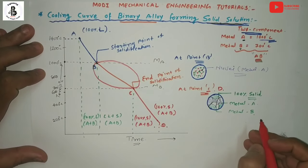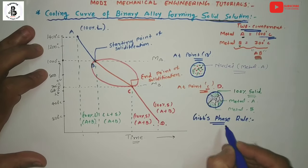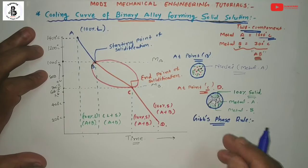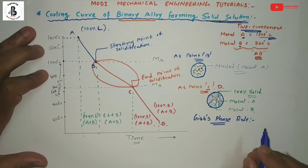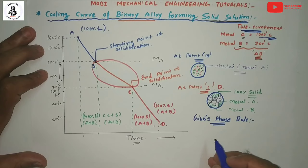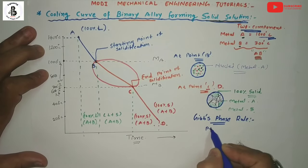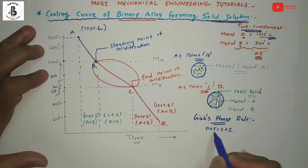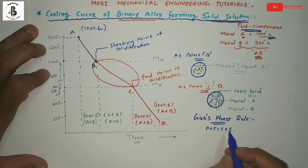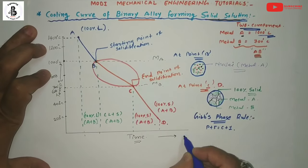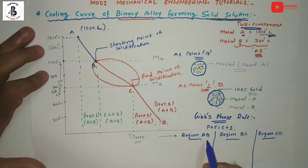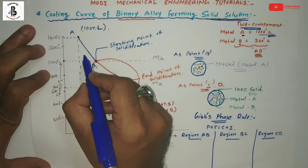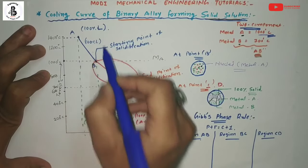According to the modified Gibbs phase rule, which considers constant pressure — since all cooling and heating processes occur at one atmospheric pressure — the equation is: P plus F equals C plus 1, where P is the number of phases, F is the degree of freedom, and C is the number of components. We apply this to regions A–B, B–C, and C–D.